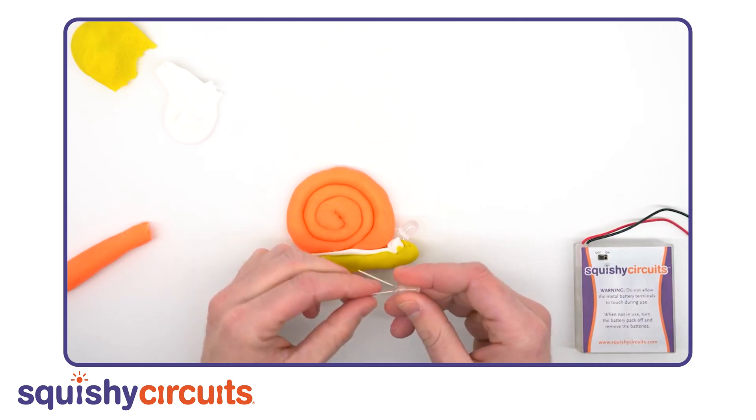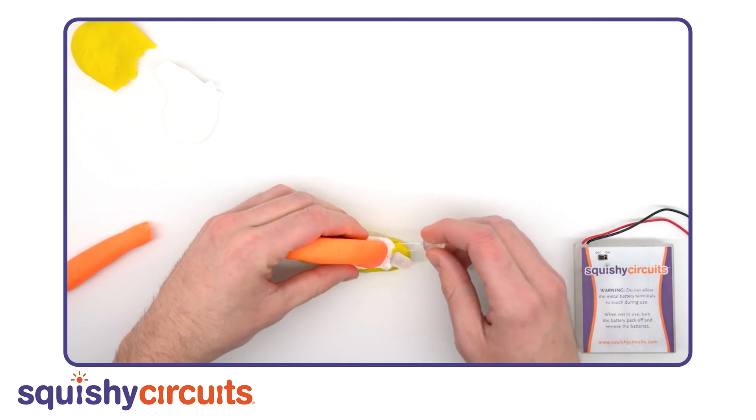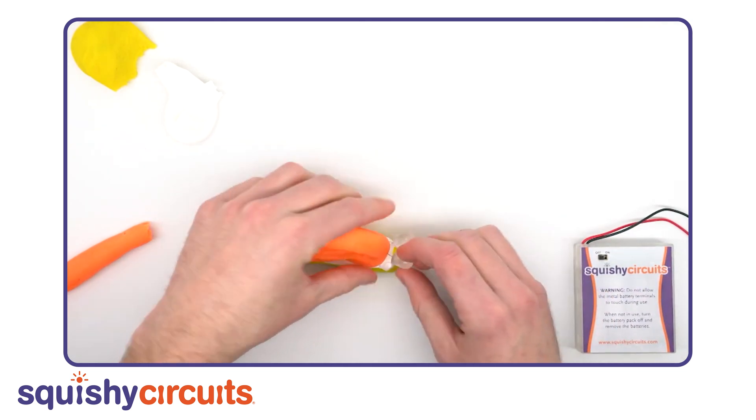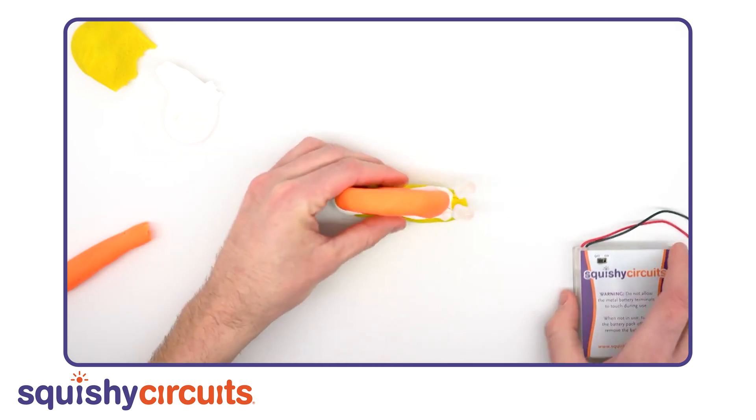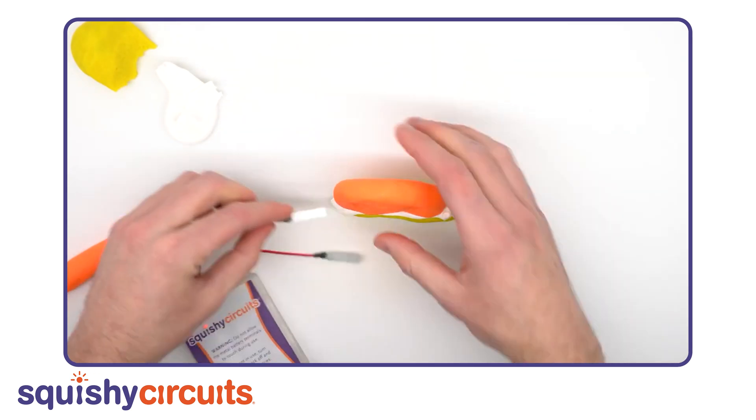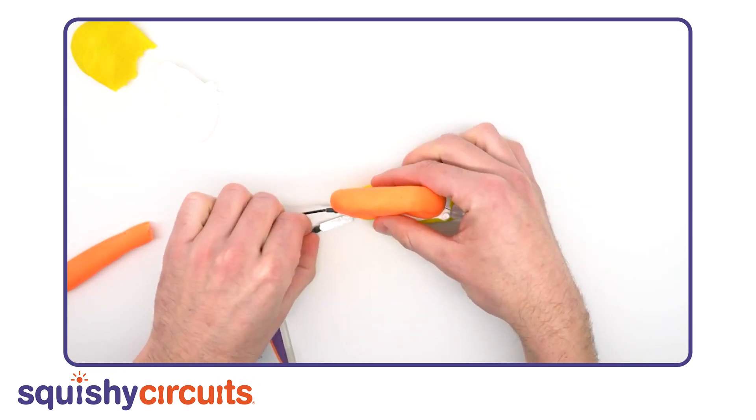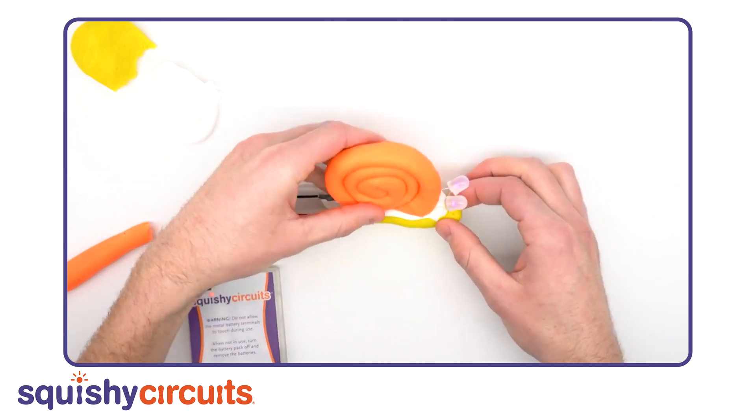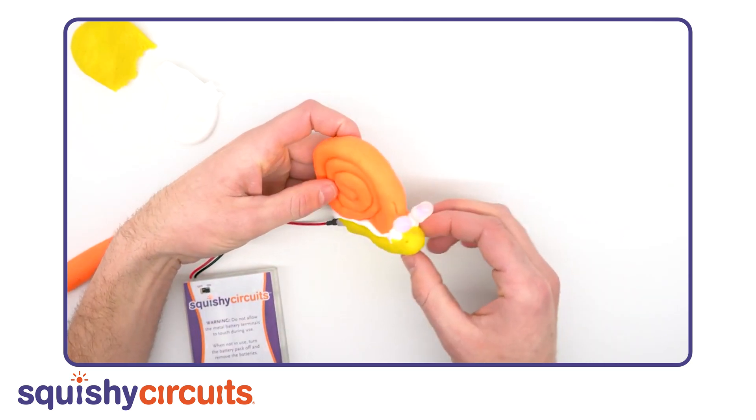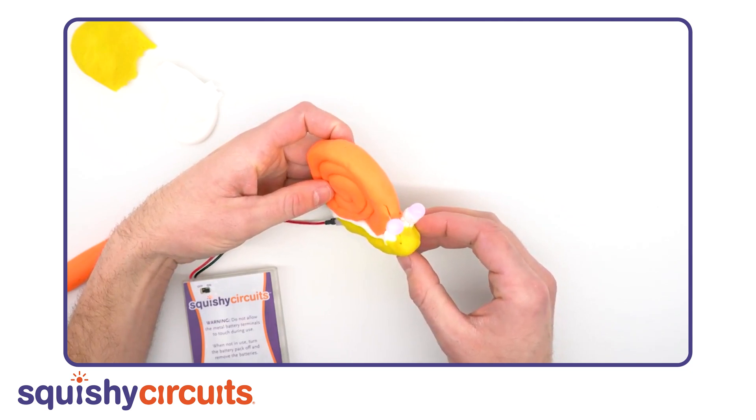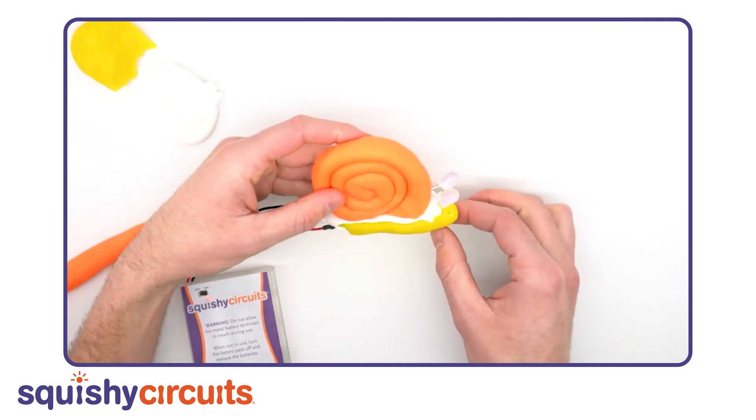Place two LED eyes into the dough connecting the two pieces of conductive dough. Remember, LEDs have polarity, so the longer terminal of the LEDs should go into the body dough and the shorter terminal into the shell. Insert the battery pack terminals with the red wire going into the body and the black wire going into the shell. Turn on the battery holder and watch your snail come to light.